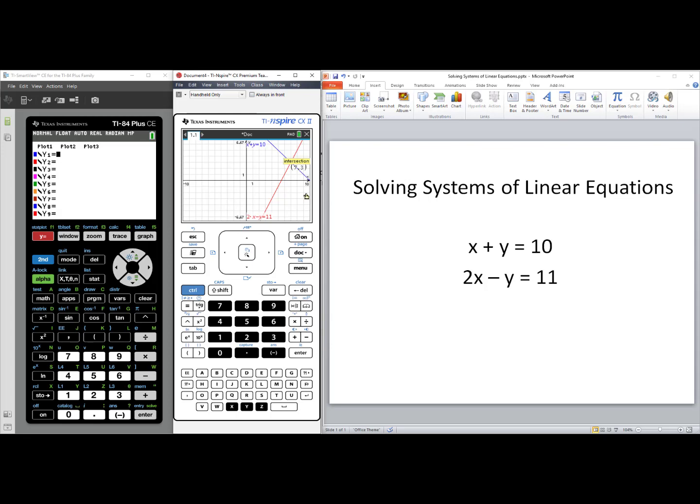For the TI-84 Plus technology, we must solve our equations for y. The first equation, x plus y equals 10, will become y equals 10 minus x. The second equation, 2x minus y equals 11, becomes y equals 2x minus 11. We can now enter this system of equations into our TI-84 Plus. In y1, we'll enter 10 minus x. In y2, we'll put in 2x minus 11.